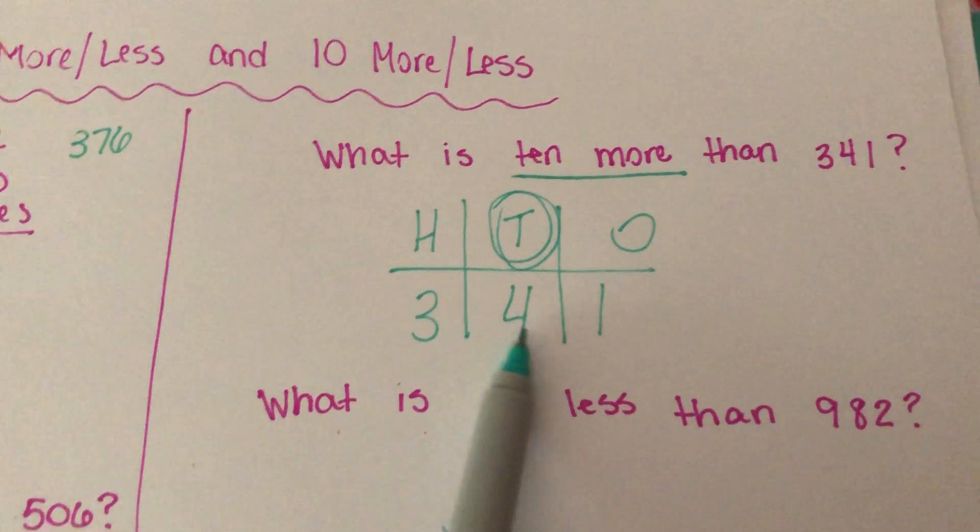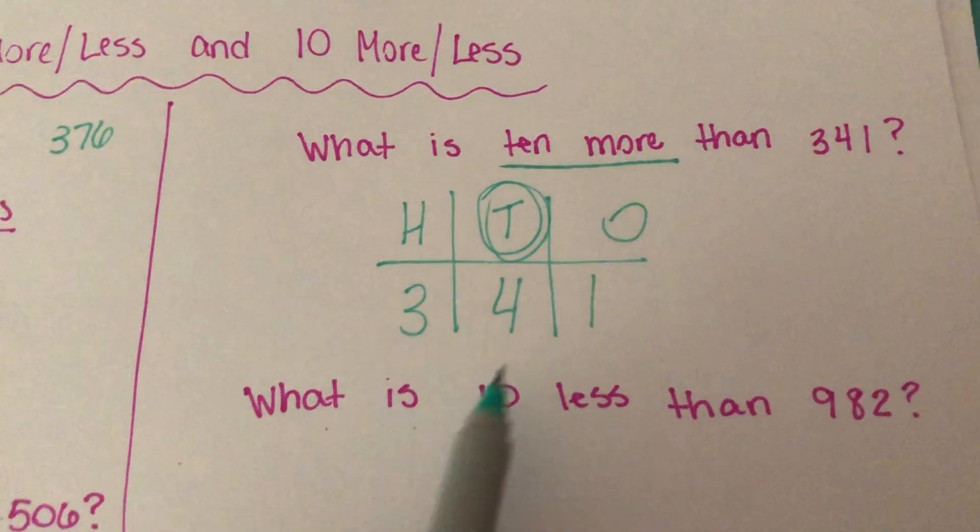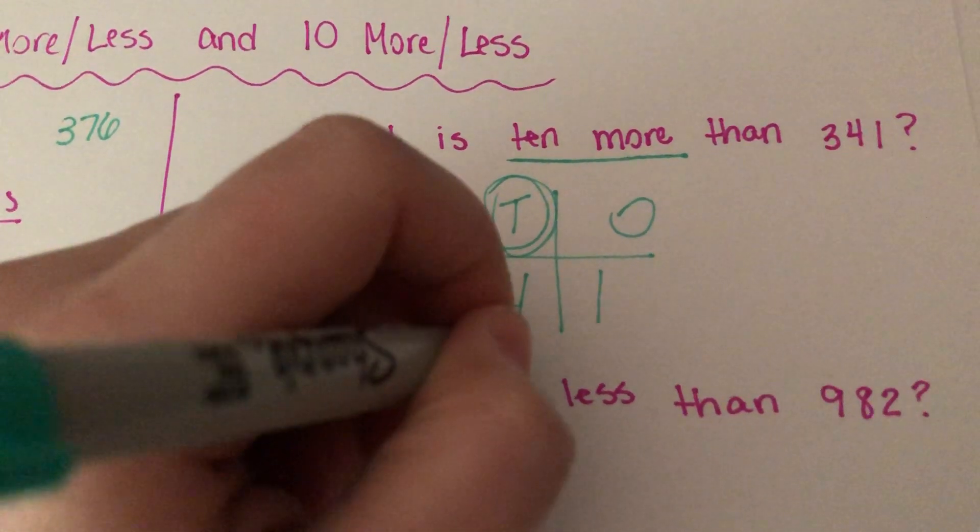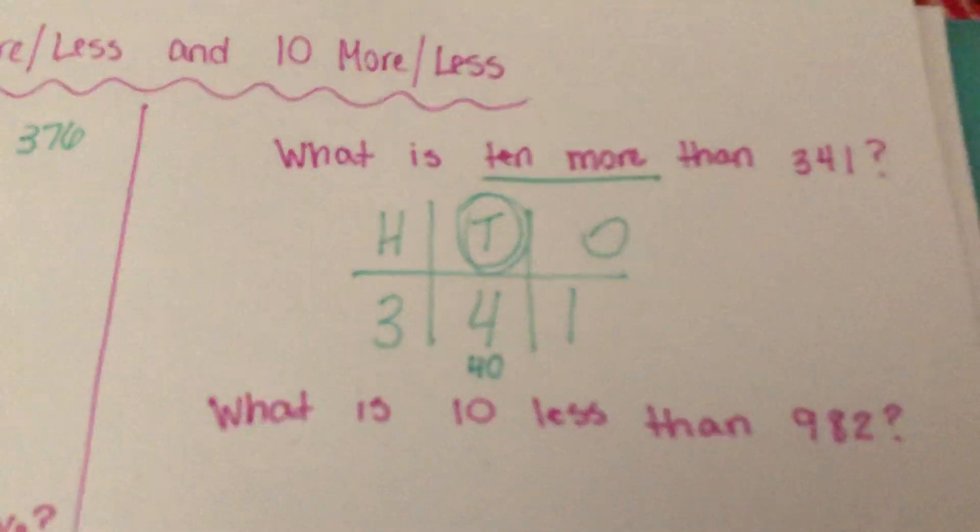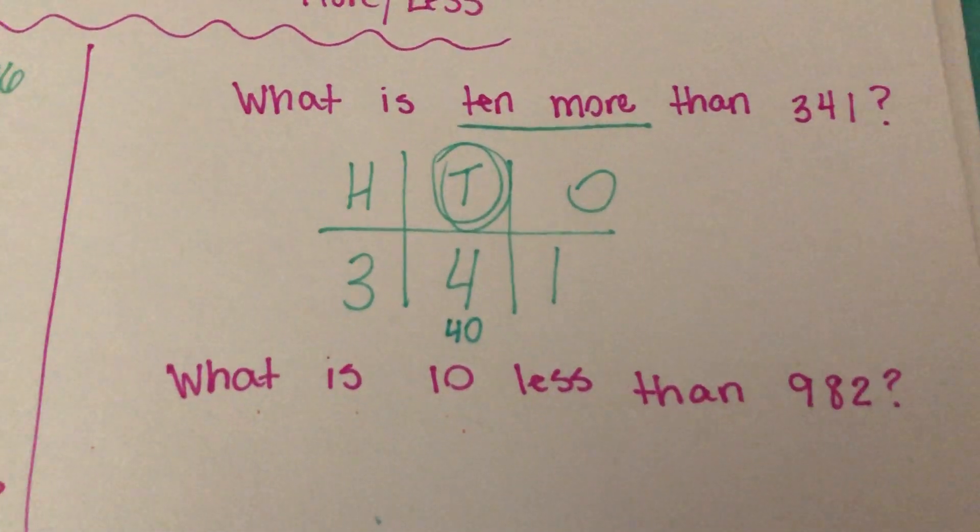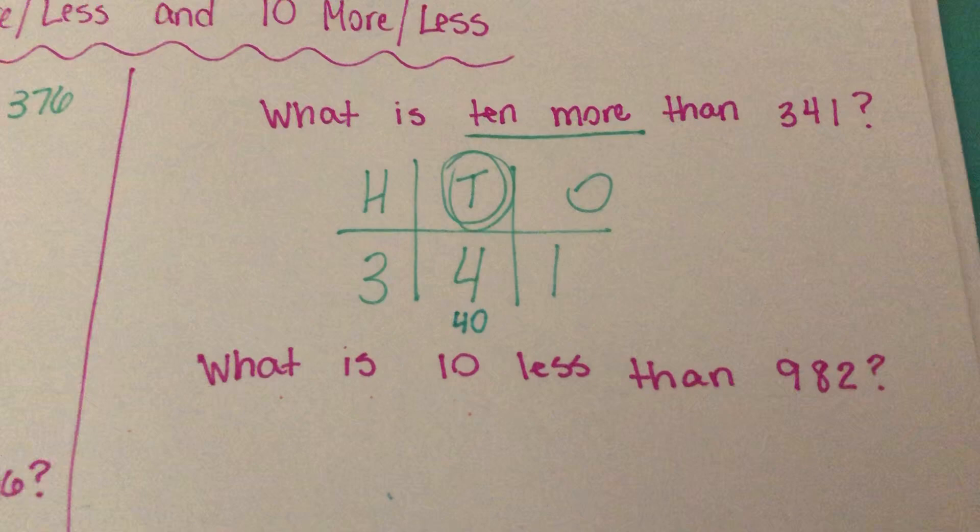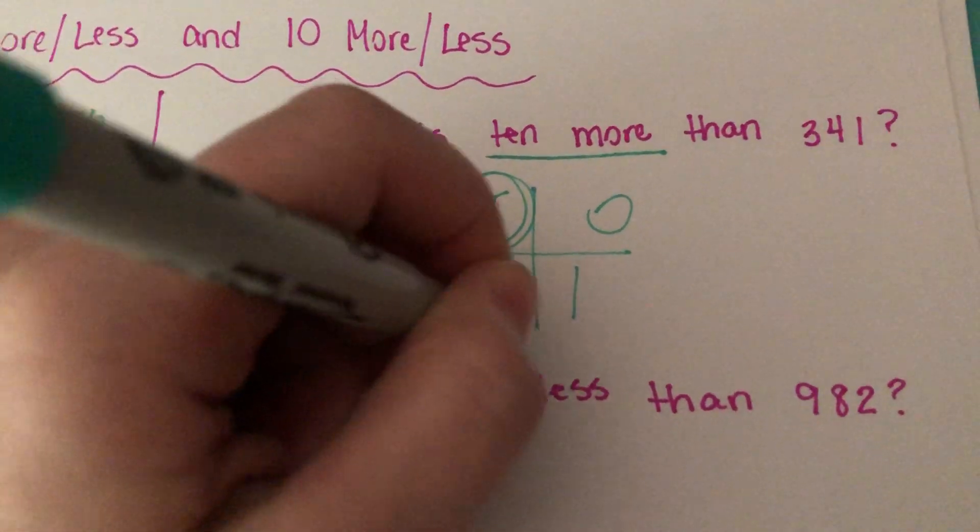If you ask your child, what's the value of this 4? They should know that four tens is the value of 40. Well, what's 10 more than 40? If they can count by tens, they should know 30, 40, 50. 50 is 10 more.